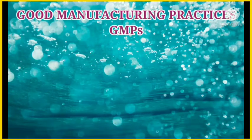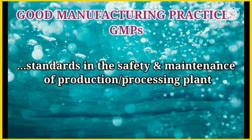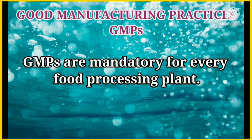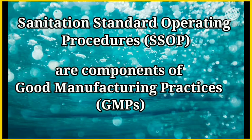But how are these related to good manufacturing practices? Good manufacturing practices, or GMP, is a system for ensuring that products are consistently produced and controlled according to quality standards. It includes accepted standards in the safety and maintenance of production or processing plants, composed of production personnel who handle food during production. Like in food or fish processing, GMPs are mandatory for every plant to follow. Sanitation Standard Operating Procedures, or SSOP, are components of GMP. Here are the GMP requirements on personal hygiene.